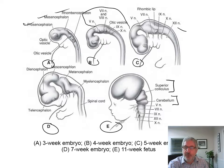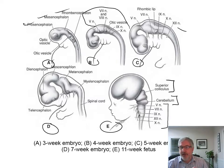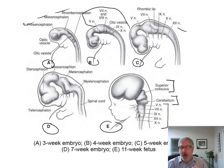You have your pons and medulla oblongata, and you have cranial nerves five, seven, nine, ten, and twelve showing up there.